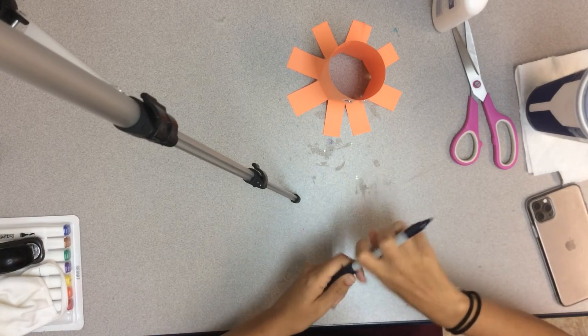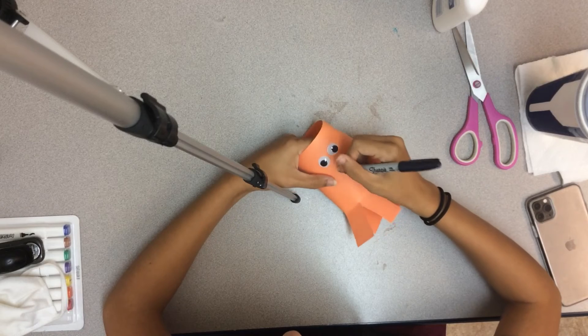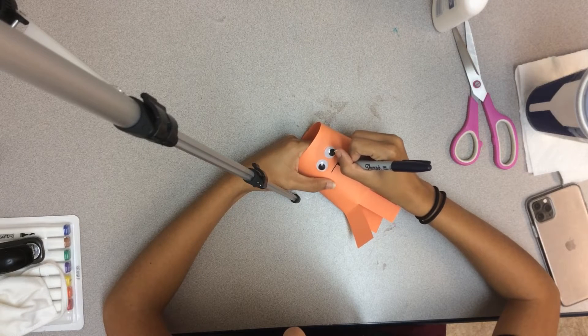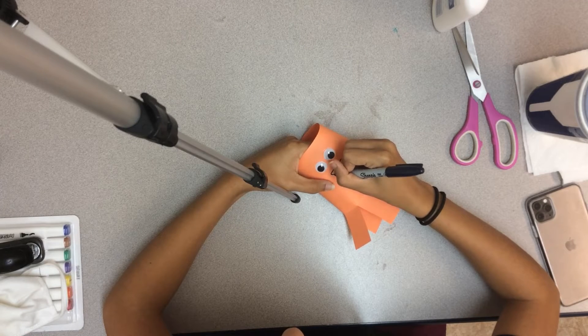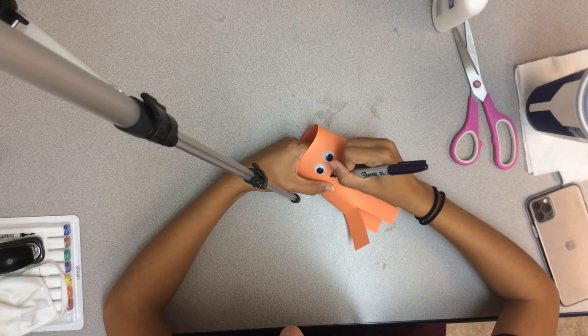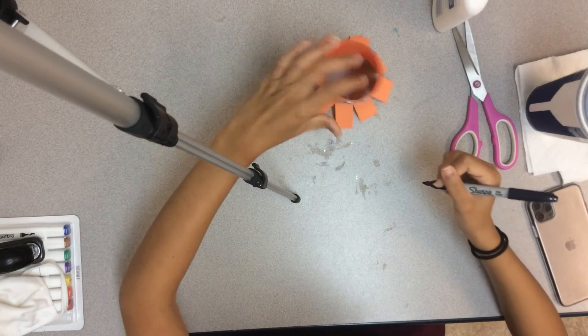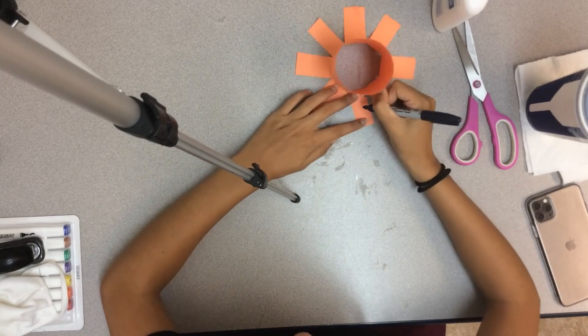After your eyeballs are glued on, you're going to draw your octopus's mouth. And you're going to draw circles all over his legs.